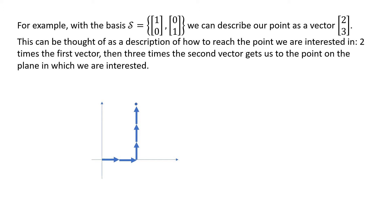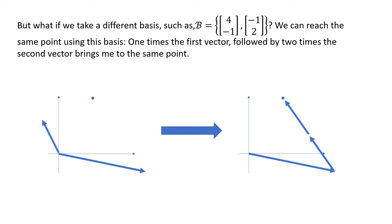When we have our standard basis, we're saying put two copies of the first vector together and three of the second. But what if we change our basis? Take the vectors (4,-1) and (-1,2). These are our two basis vectors. If instead of thinking about R2 being built by (1,0) and (0,1), we think of R2 being built by (4,-1) and (-1,2), we can stitch those together to get any point at all.